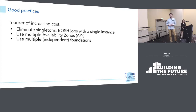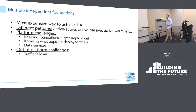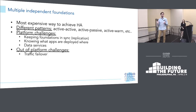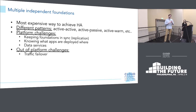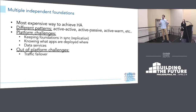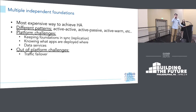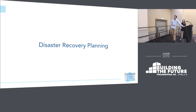Once we have these SLOs we can start thinking about how to implement them. Obvious things include not running BOSH jobs with one instance and always using multiple VMs or multiple availability zones. But one thing I want to emphasize is using multiple independent foundations, possibly geographically distributed. This is the most expensive way of achieving HA because you have to duplicate and keep foundations in sync. Active-active is a pattern where both foundations serve traffic; active-passive has one serving traffic and the other waiting for failover. Challenges include keeping them in sync and data services access.